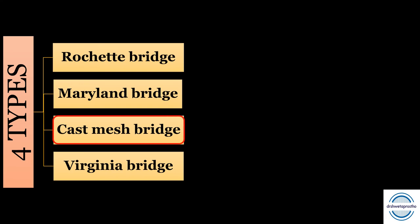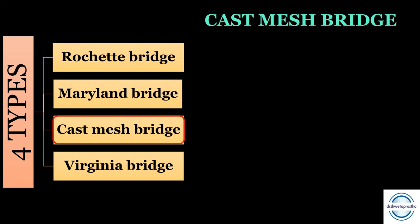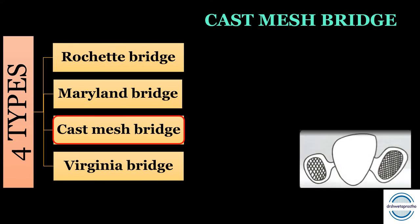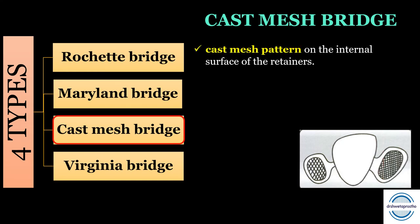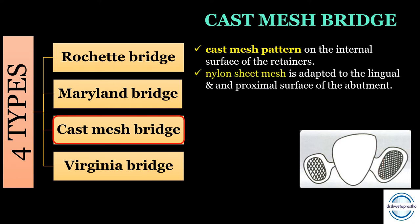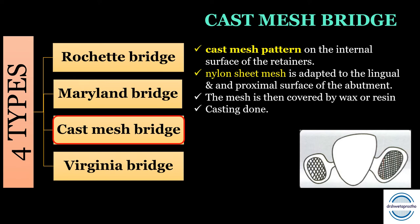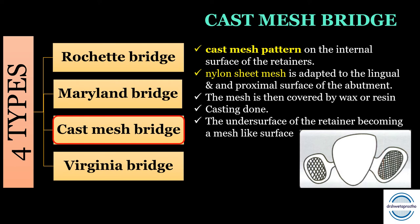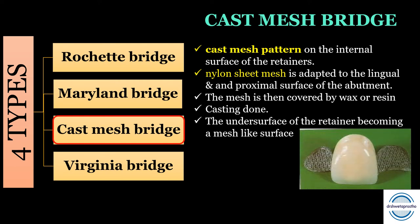Third are the cast mesh bridges. A cast mesh pattern is used on the internal surface of the retainers for retention. Nylon mesh is adapted on the lingual and proximal surface of the abutment, covered by wax pattern, and casting is done — the undersurface becomes a mesh-like surface. Limitations: the cast mesh makes it difficult to adapt to fine details of the abutment tooth, and the thickness of the cast mesh compromises retentive ability.